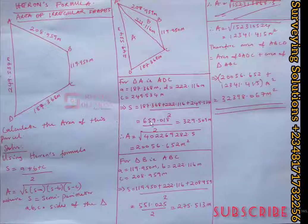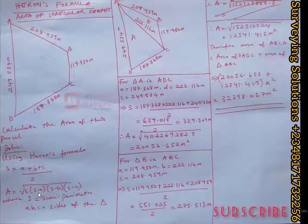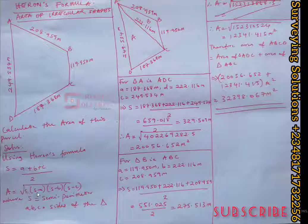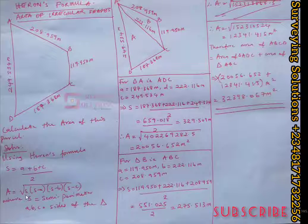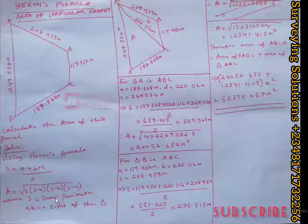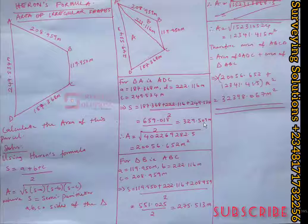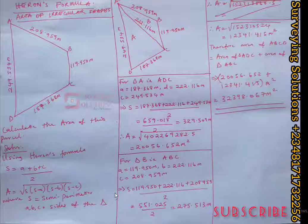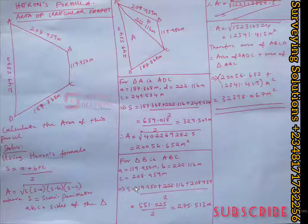The area is dependent on the semi-perimeter. I would advise you to process what is inside the square root first, then take the square root — it's less confusing. So you compute: 329.509 × (329.509 − 187.368) × (329.509 − 222.116) × (329.509 − 249.534).